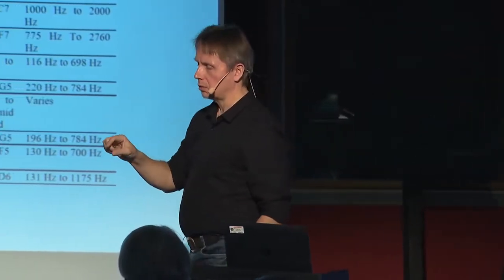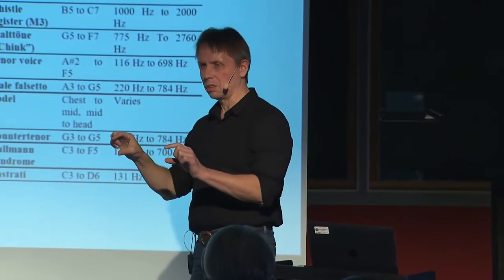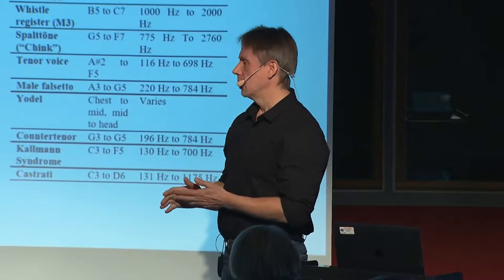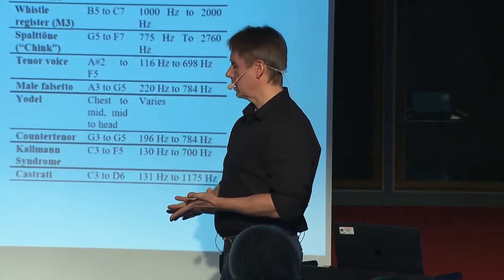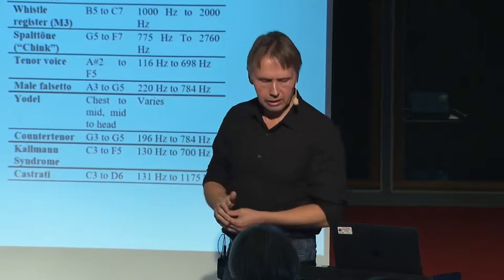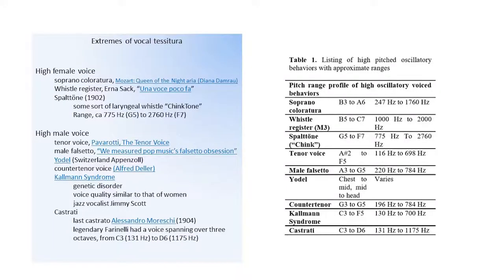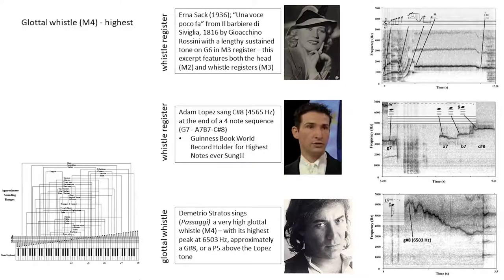M3 is referred to as the whistle register, singing in the whistle register. Maybe some of you know that, the pfeifstimme. But M4 is something that is a different sort of mode of singing. And it's even higher than the whistle register, which is M3. And so we're calling that the glottal whistle or M4. And here we see the whistle register, which is basically the highest documented register. And we've actually have documents of it, and it's been published, that the M4 is a different and higher mode of singing. But let's go back to the M3.